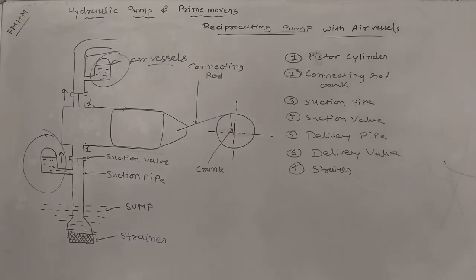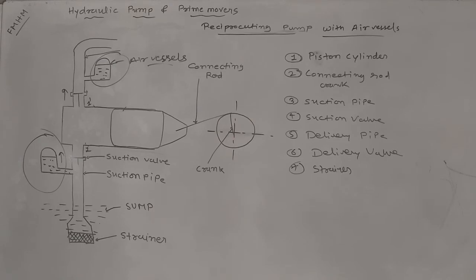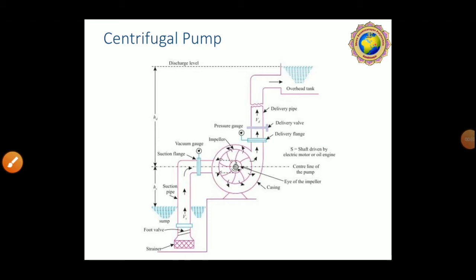The reciprocating pump is a positive displacement pump; the centrifugal pump is a rotodynamic pump. In the reciprocating pump, vacuum is created and fluid is drawn in, then pressurized to discharge. For the centrifugal pump, the main components are: strainer, suction valve, suction pipe, impeller, casing, delivery pipe, delivery valve, and overhead discharge tank.